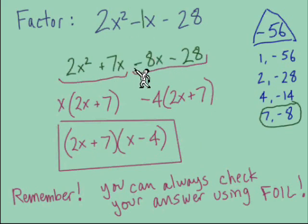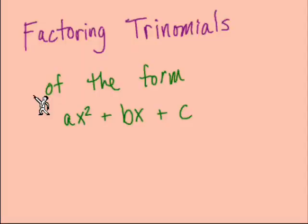When you get to test time and have factoring problems, check a few, especially ones that felt bumpy. Take your answer and do the FOIL method. If you can come up with the trinomial you started with, it's almost a guarantee you factored correctly. If not, double-check these middle steps. That does it for factoring trinomials of the form ax² + bx + c.